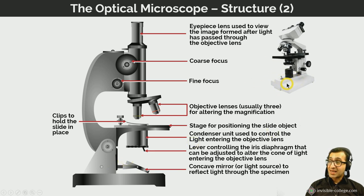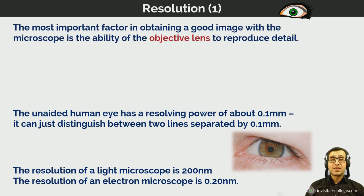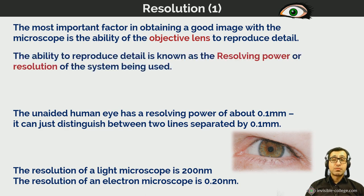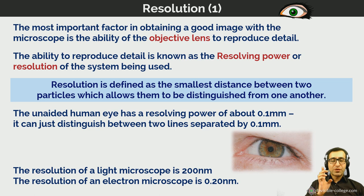The most important factor in producing a good image with a microscope is the ability of the objective lens to reproduce detail — referred to as the resolving power or resolution of the microscope. Resolution is defined as the smallest distance between two particles that allows them to be distinguished from one another. The unaided human eye has a resolving power of about 0.1 millimeters. The resolution of a light microscope is 200 nanometers, and the resolution of an electron microscope is 0.2 nanometers.